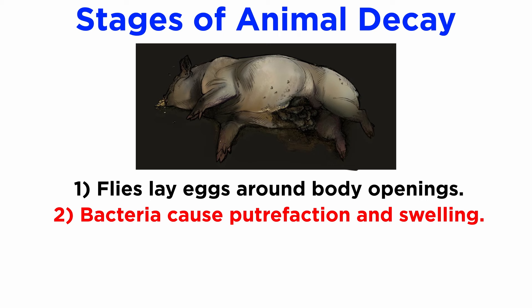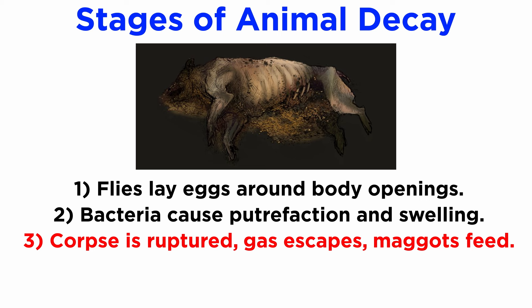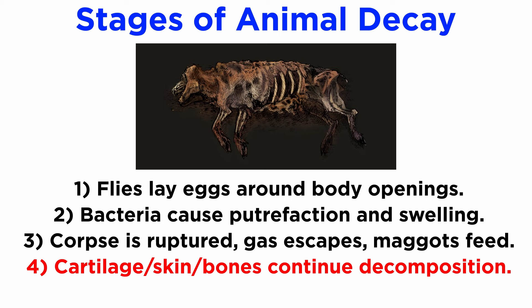The next stage commences when the skin of the corpse is ruptured. The gases escape and the carcass deflates again. In this decay stage, the maggots proliferate and consume much of the soft tissue. Predators such as wasps, ants, and beetles also arrive to feed on the fly larvae. In the following stage, only cartilage, skin, and bones remain. At this point, different groups of flies and beetles, along with their parasites, take over the decomposition process.